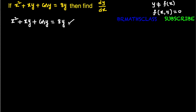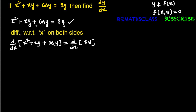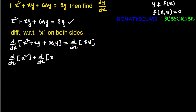We identified that the given equation is an implicit function. Once you identify that the given equation is an implicit function, you differentiate the complete equation with respect to x on both sides. You observe here for the given equation — I have written d/dx on both sides, indicating that we are differentiating with respect to x on both sides.